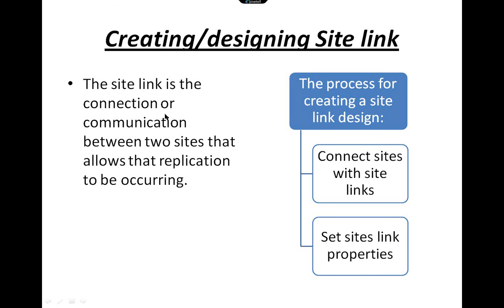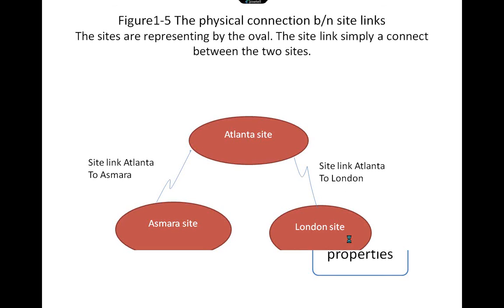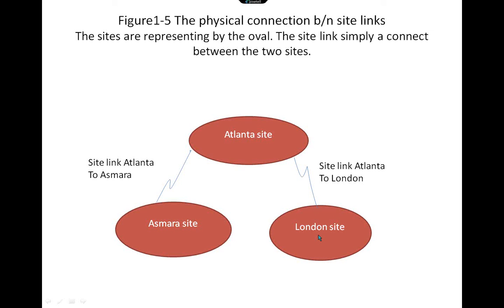Creating a site link: the site link is the connector or communication between two sites that allows replication to be accurate. The process for creating a site link design includes connecting the site links and setting the site properties. In this example, the Atlanta site is linked to the Asmela site, and the Atlanta site is also linked to the London site.